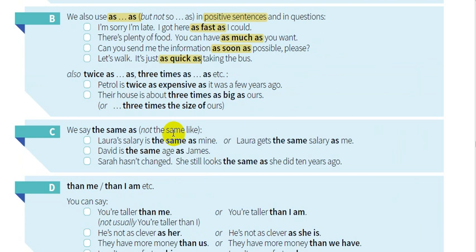Let's write another note: we can use a number before "as". For example: "Petrol is twice as expensive as it was a few years ago." Here "twice" is a number — as expensive as. Another example: "three times as big as". Usually it is an ordinal-type number. So: a number can come before "as" — twice as expensive as, three times as big as.